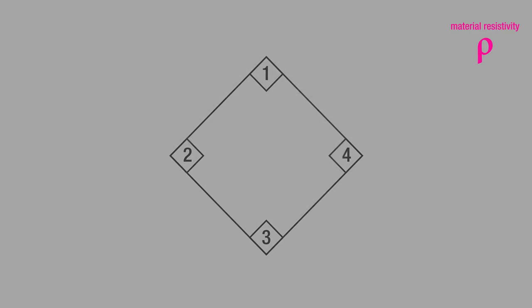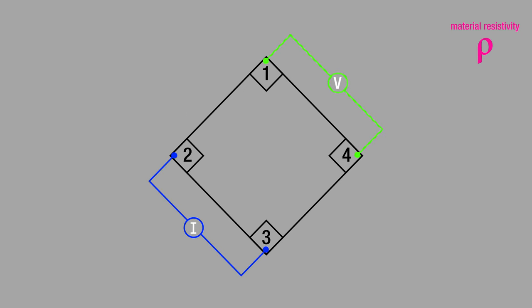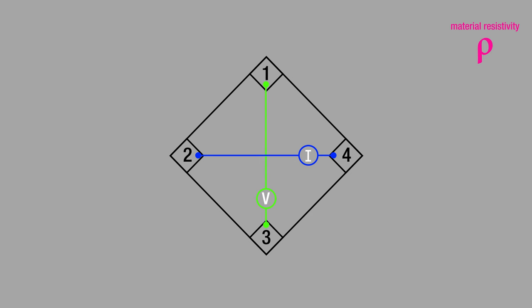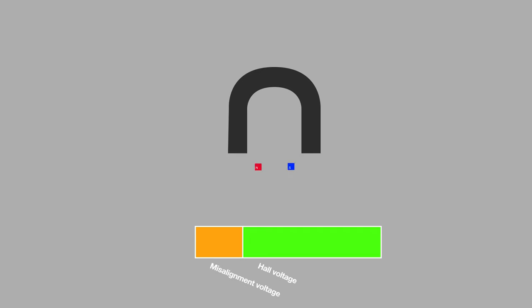Now with the known material resistivity, we can proceed with the Hall effect measurement. In order to measure Hall voltage, we must rearrange the contact configuration — for resistivity we sourced and measured on two adjacent contacts along opposite edges, but now we must source and measure across opposite contacts. Unfortunately, the voltage measured in this configuration is not solely the Hall voltage; it also contains two error terms: the thermoelectric voltage, which arises between dissimilar materials, and the misalignment voltage, which results from imperfect contact geometry. To remove thermoelectric voltage we reverse the current; to remove misalignment voltage it is common to reverse the magnetic field.